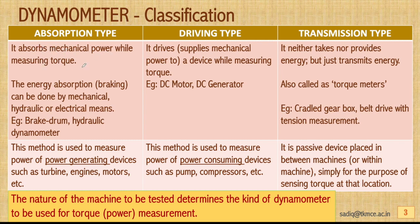Energy absorption in absorption type dynamometers is done by means of braking, which can be achieved by mechanical, hydraulic, or electrical means. Examples include prony brake dynamometers and hydraulic dynamometers. This method is used to measure power of power-generating devices such as turbines, engines, and motors — basically prime movers.